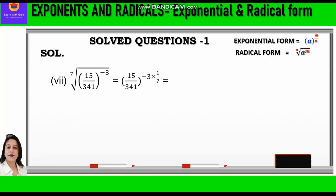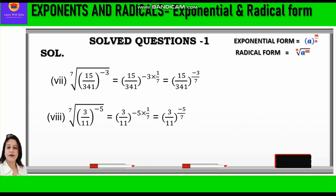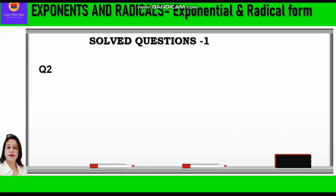Seventh part: 7th root of (15 by 341) raised to power minus 3. Minus 3 is the power and 7 is the root, so we write (15 by 341) raised to power minus 3 times 1 by 7, which equals (15 by 341) raised to power minus 3 by 7. Eighth part: 7th root of (3 by 11) raised to power minus 5. Minus 5 comes in the numerator and 7 in the denominator, giving us (3 by 11) raised to power minus 5 by 7.